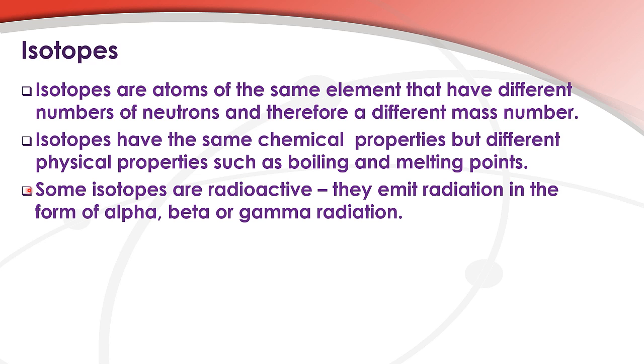Some isotopes are radioactive. They emit radiation in the form of alpha, beta or gamma radiation.